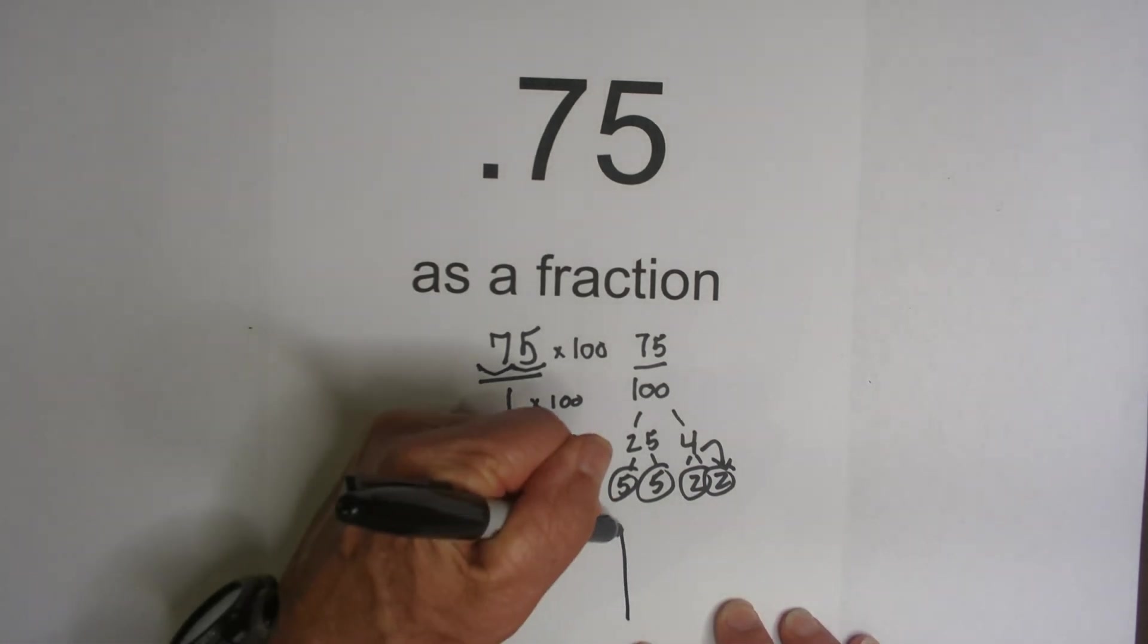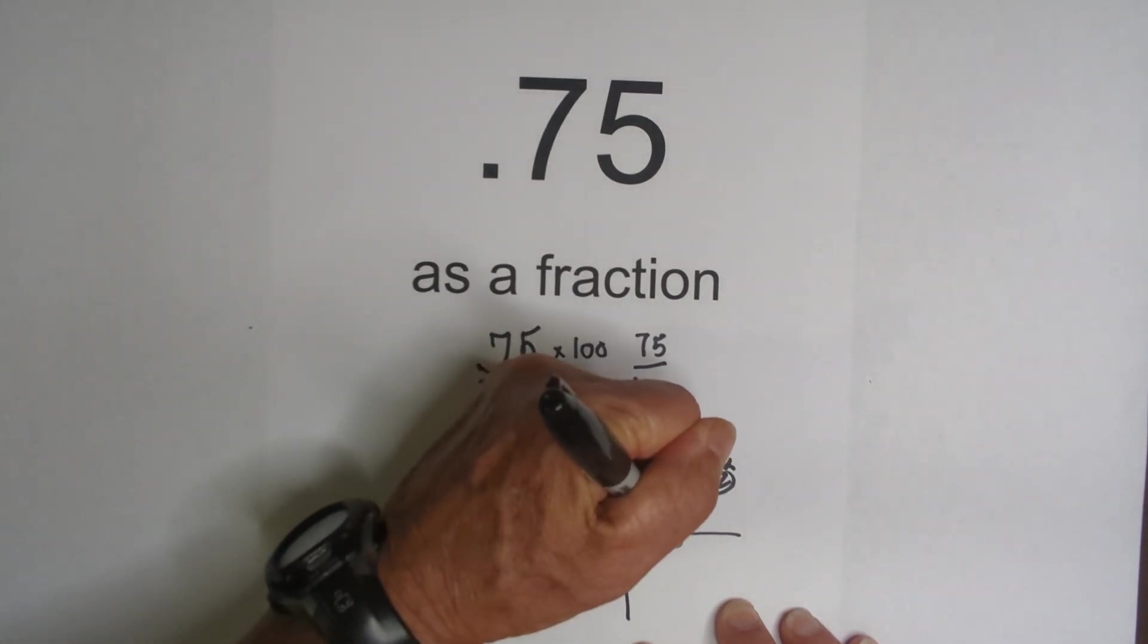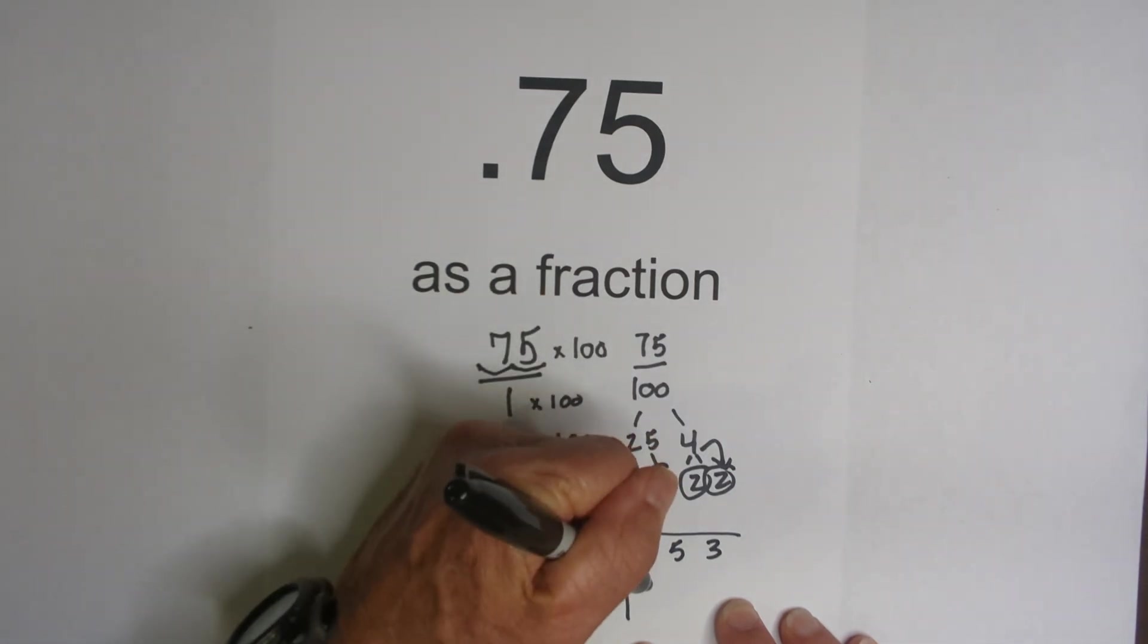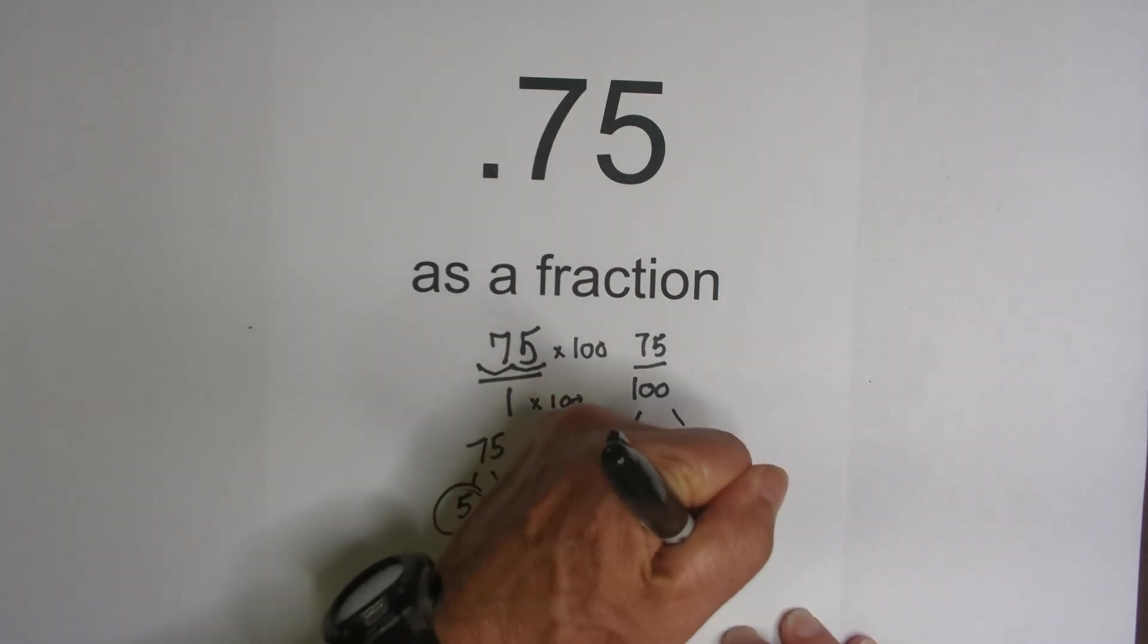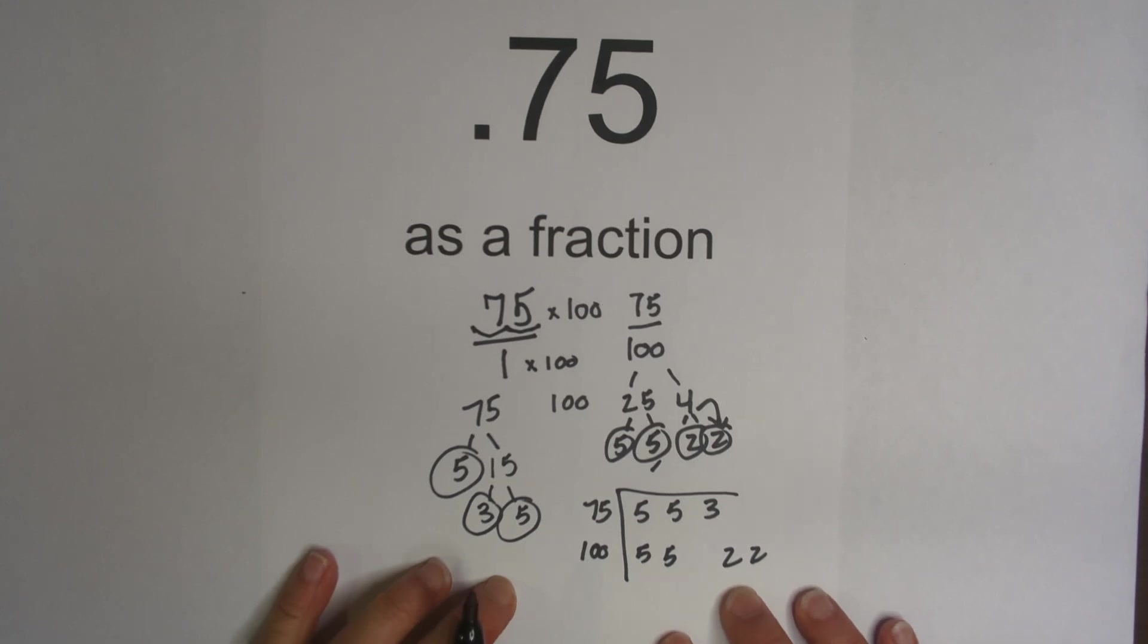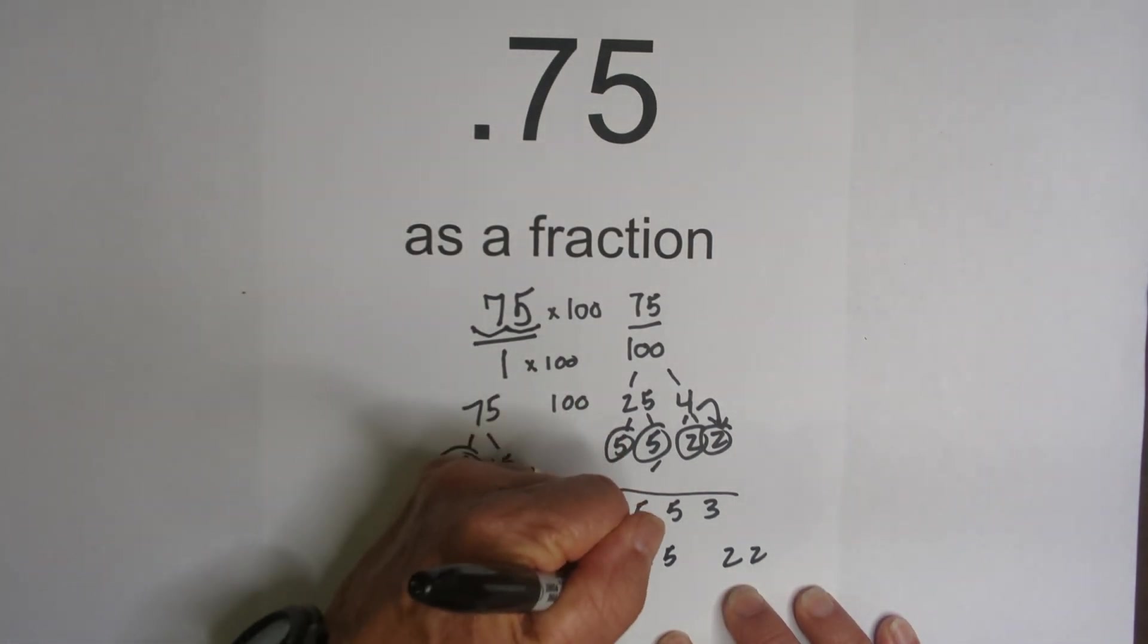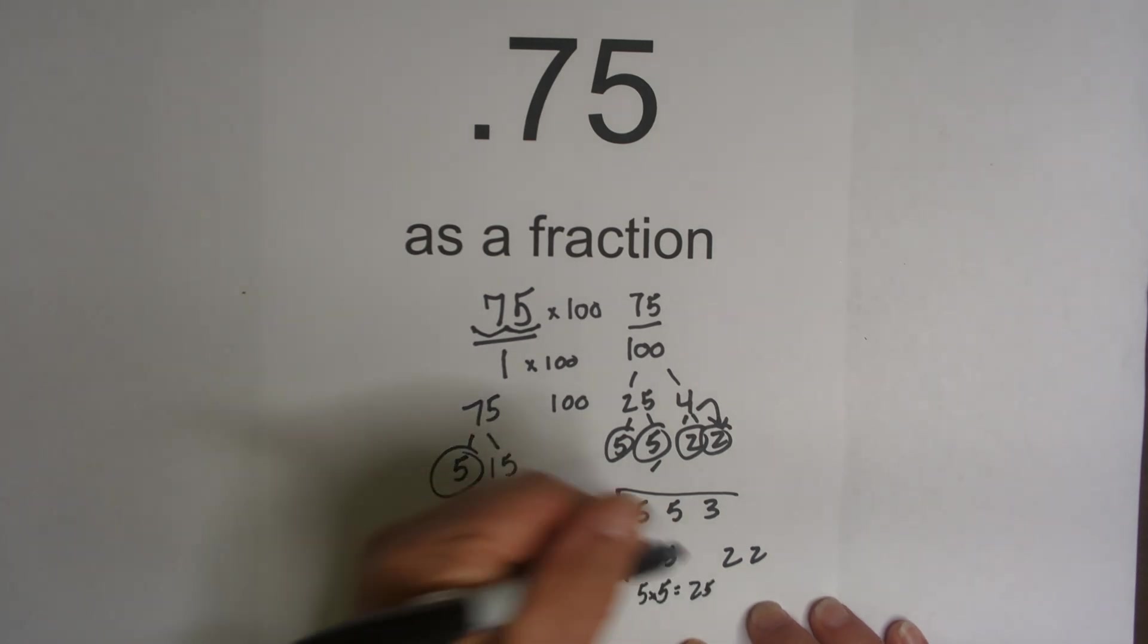So then what you do is you can put them in this little chart. We have 75 and 100. So now we write 5, 5, and 3, and then for 100 we're going to write 5, 5, skip the 3, 2, 2. And then to find the greatest common factor, I need to have the same numbers in a column. So we have 5 and 5. Multiply those so it is 25. So now we have the greatest common factor.